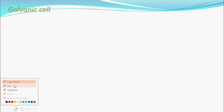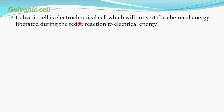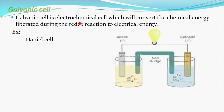A galvanic cell is an electrochemical cell which converts the chemical energy liberated during a redox reaction into electrical energy. The most common example of a galvanic cell is the Daniel cell.